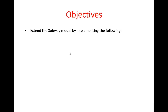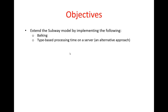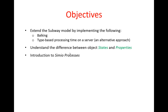As for the objectives of the lab, we're going to extend the model that we have developed in a previous lab by adding bulking and type-based processing time, but this time using an alternative approach using add-on processes. In order to do these extensions, we first need to understand the difference between object states and properties, and we will also introduce Simeo processes and their characteristics, and learn how to use add-on process triggers or state assignments to extend or enhance the behavior of different components of our model.